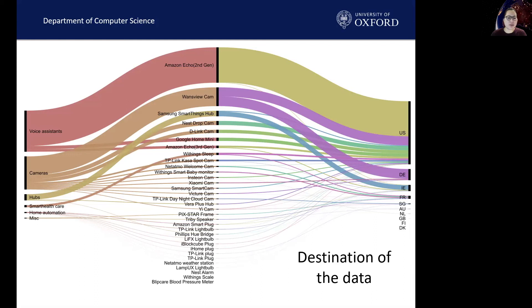We also examined the devices that contacted the most destinations. We found that one of the light bulbs contacted over 28 destinations. When compared to other devices such as smart cameras and smart hubs, we found the light bulb has limited features, so it is surprising that it contacted that many destinations.